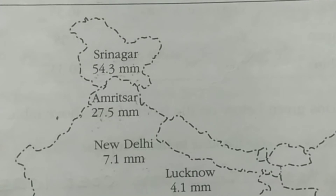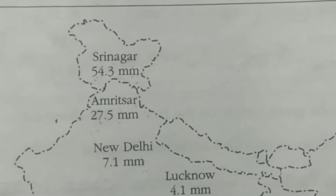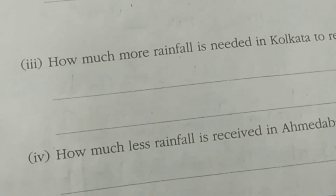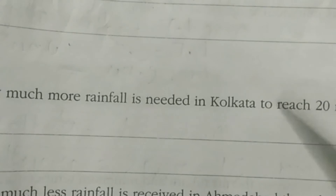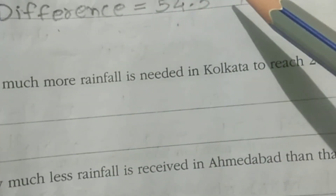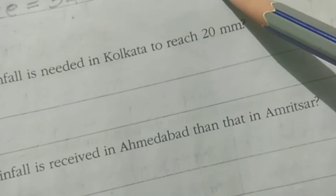Question number 14: The following map shows the amount of rainfall received in various states in India. Question 1 is which place received the highest rainfall in July? We look for the highest number — Srinagar has the highest rainfall at 54.3 mm. The next question asks how much more humid Srinagar is compared to New Delhi: Srinagar is 54.3 mm and Delhi is 7.1 mm, so the difference is 47.2 mm.